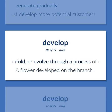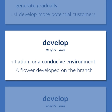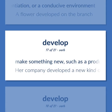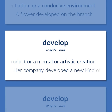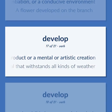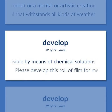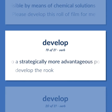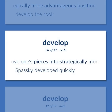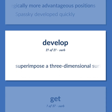Develop: Grow, progress, unfold, or evolve through a process of evolution, natural growth, differentiation, or a conducive environment — a flower developed on the branch. Make something new, such as a product or a mental or artistic creation — her company developed a new kind of building material that withstands all kinds of weather. Make visible by means of chemical solutions — please develop this roll of film for me. Move into a strategically more advantageous position — develop the rook. Move one's pieces into strategically more advantageous positions — Spassky developed quickly. Superimpose a three-dimensional surface on a plane without stretching, in geometry.